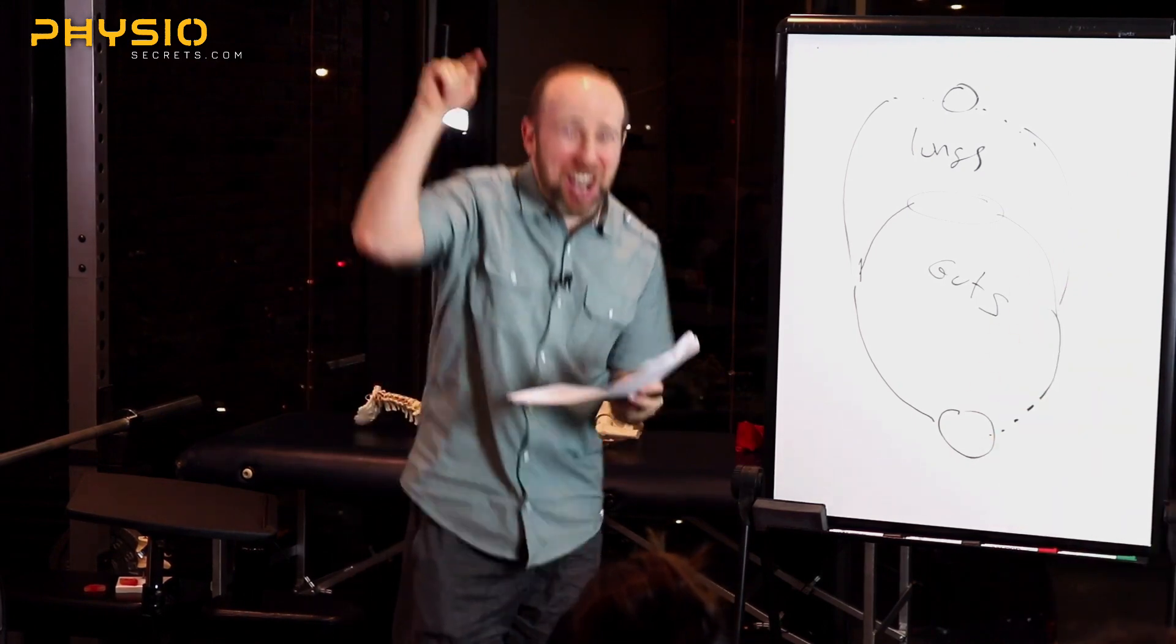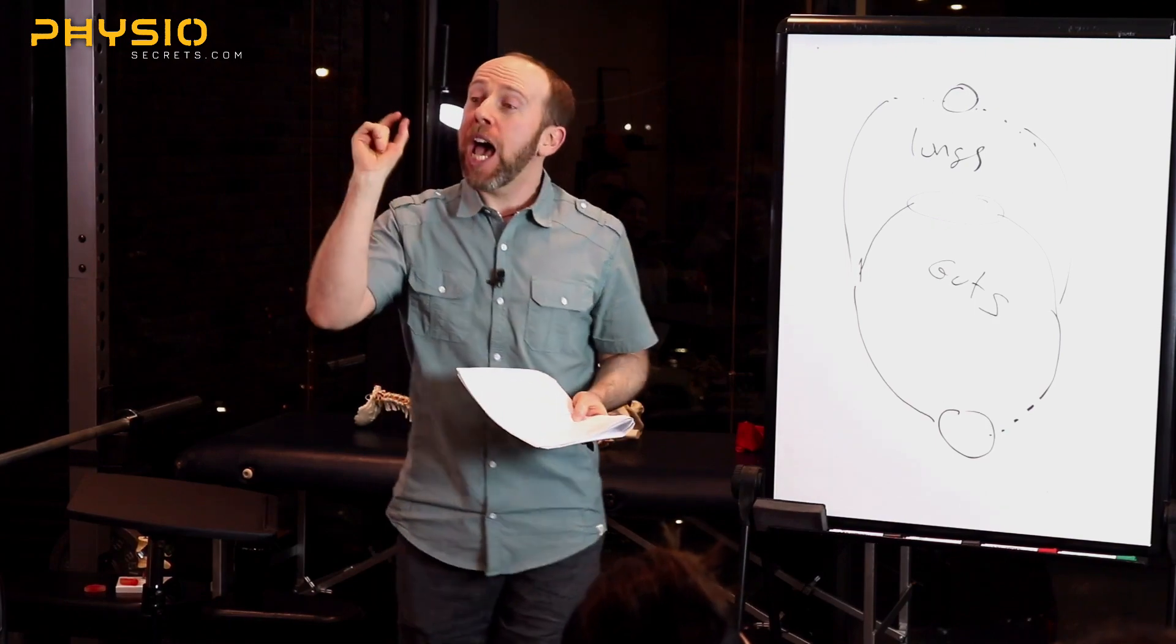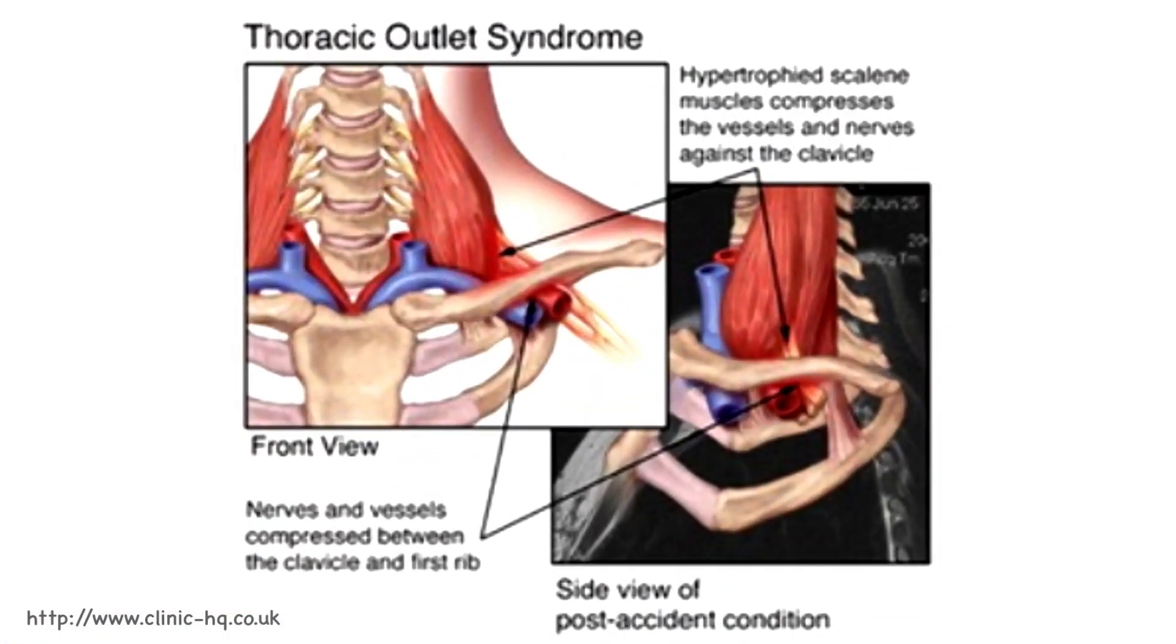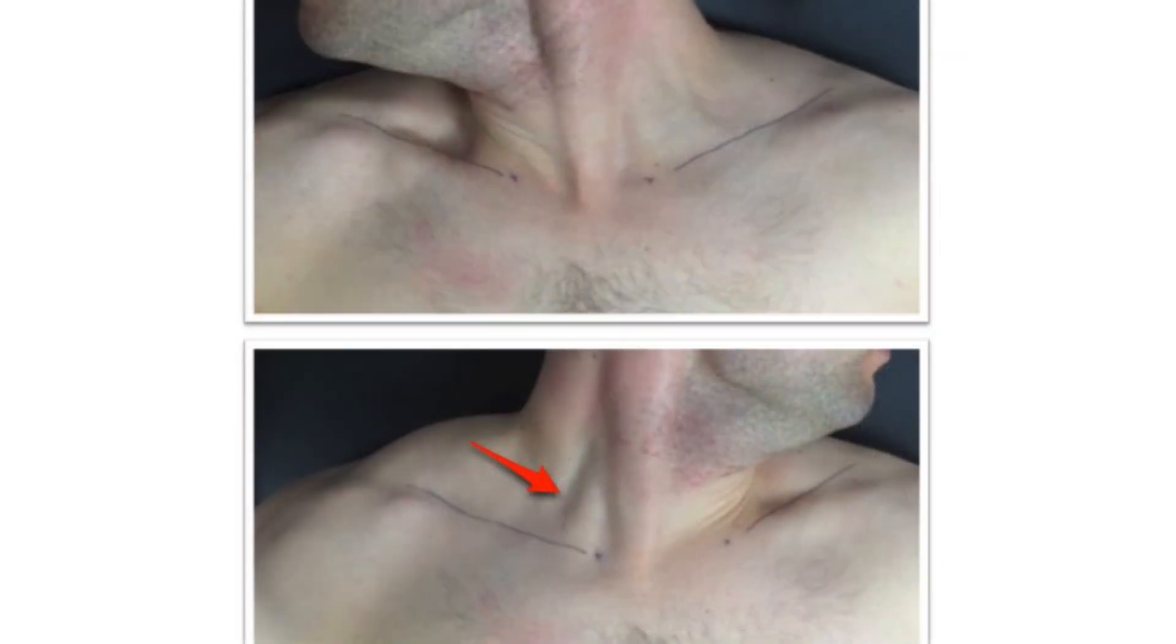Here's what does cause thoracic outlet syndrome. What does cause thoracic outlet syndrome is a hypertrophied, thickened scalene muscle complex because of breathing mechanics. It doesn't need to be the first rib. The neighbor right there can cause all the same symptoms.